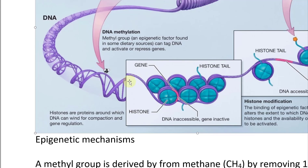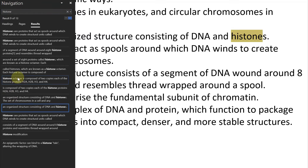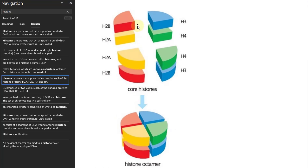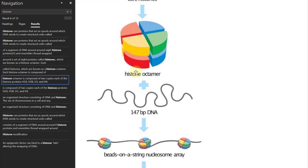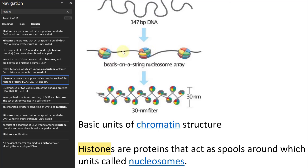If you zoom in to how the chromatin is set up, you have histone proteins — eight of them arranged as an octomer, four in front and four behind. The DNA is looped around these eight proteins, forming a nucleosome, which is the basic building block of chromatin. Histones are proteins around which DNA winds for compaction and gene regulation.